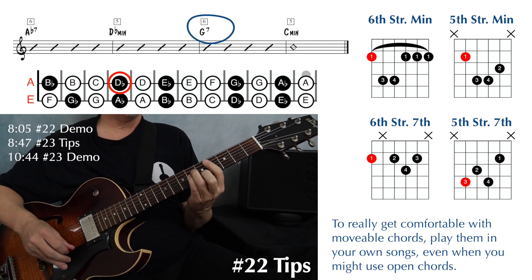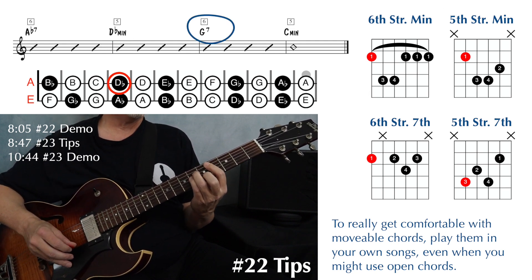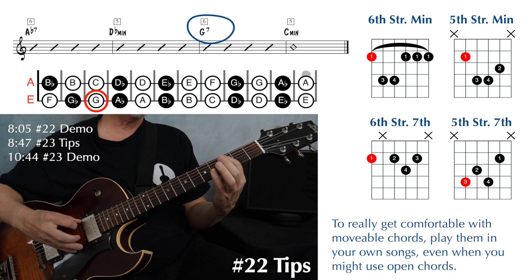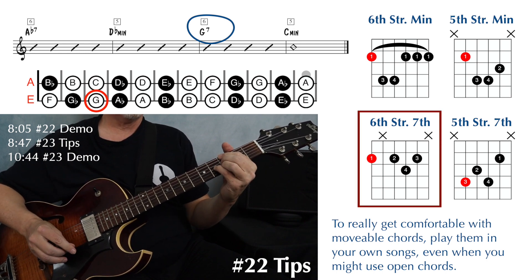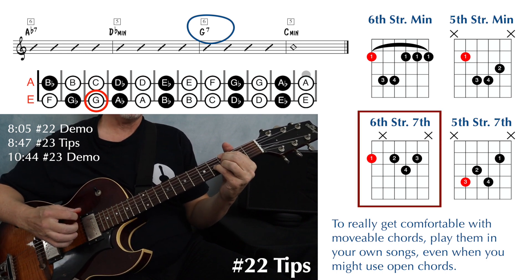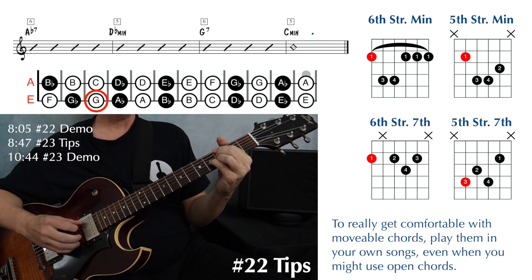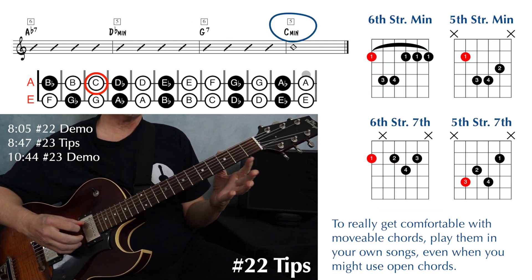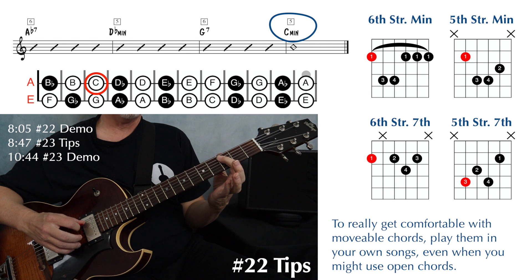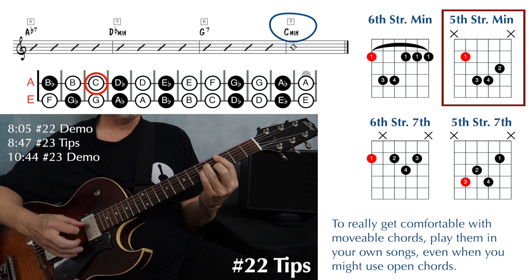G seven on string six — find your G on string six, that'll be at the third fret, using the sixth string dominant seven shape. And then a C minor on string five — find your C on string five, that'll be right there at the third fret, playing the fifth string minor shape.